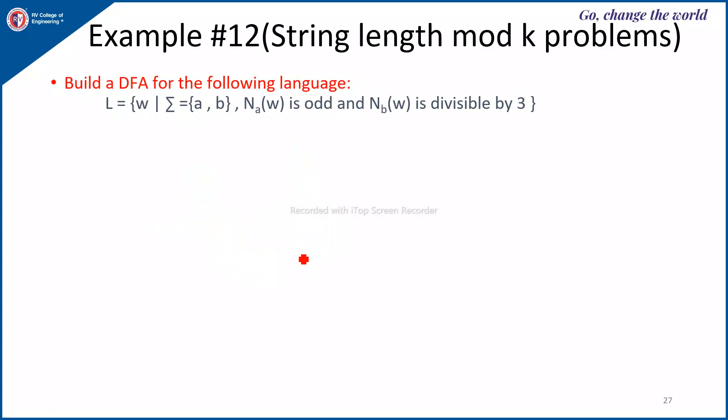Next, here number of A's is odd and number of B's is divisible by 3. So number of A's is odd means number of A's mod 2 is equal to 1 and number of B's mod 3 is divisible by 3, that means mod 3 is 0. So here you start with Q0, first both A's and B's mod count are 0, 0.